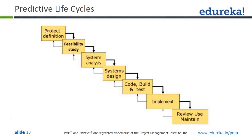Does it mean there is no overlapping in sequential phases? It can be either a series of sequential or overlapping phases — you can see there is some overlapping in almost every phase shown. You have project definition leading to feasibility study, leading to system analysis, leading to system design. Every phase will have some kind of input given back to the previous phase.